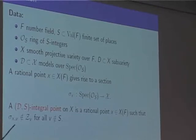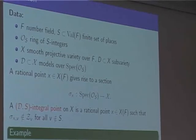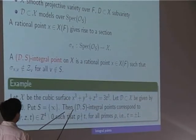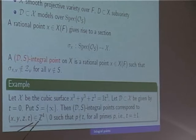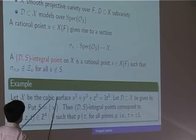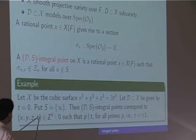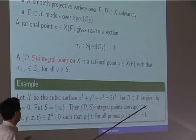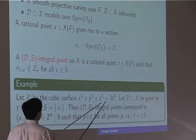The standard example: take a cubic surface like X³ + Y³ + Z³ ± T³ = 0 and put the divisor T = 0 at just the infinite place. An integral point means we pick a primitive representative — integers x, y, z, t — such that p does not divide the t-coordinate for all primes p. Since t is an integer not divisible by any prime, t = ±1, giving a non-homogeneous equation x³ + y³ + z³ = ±1.